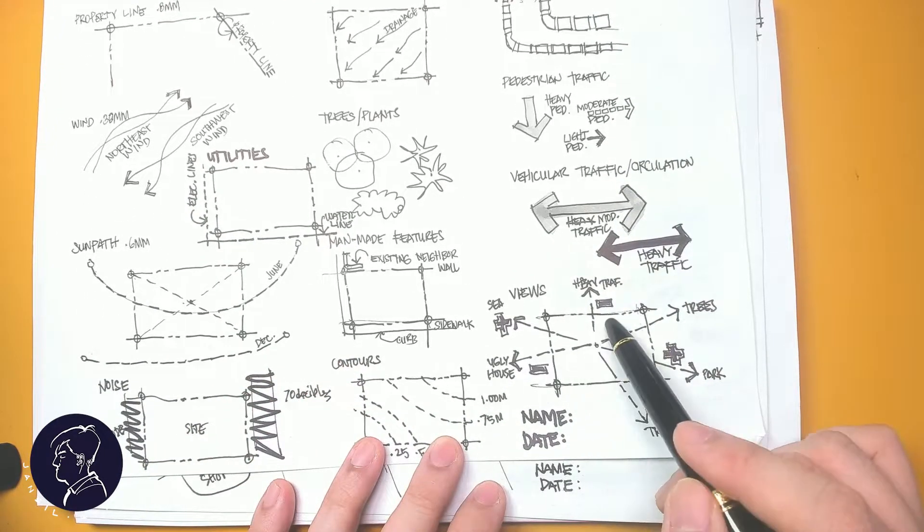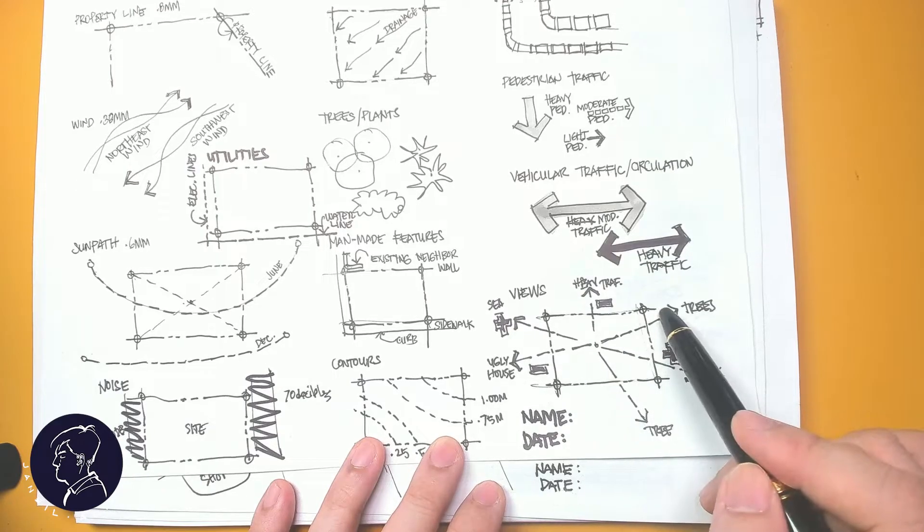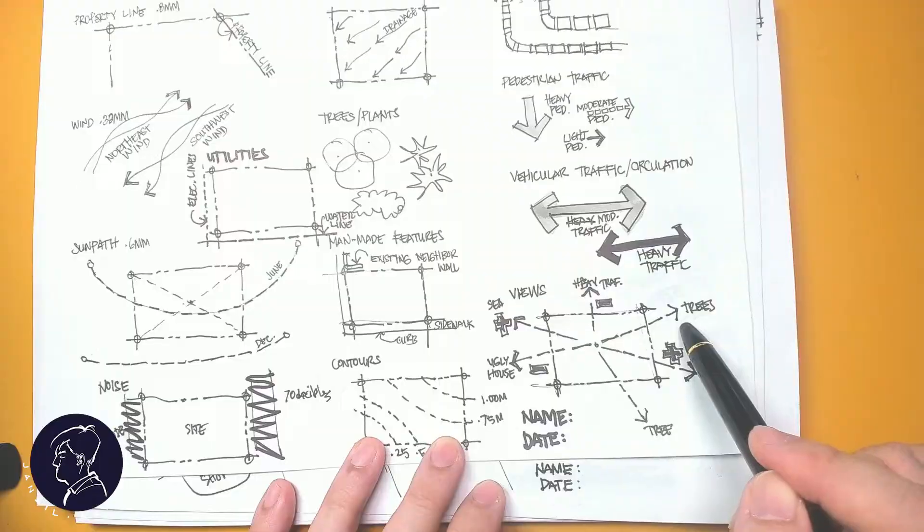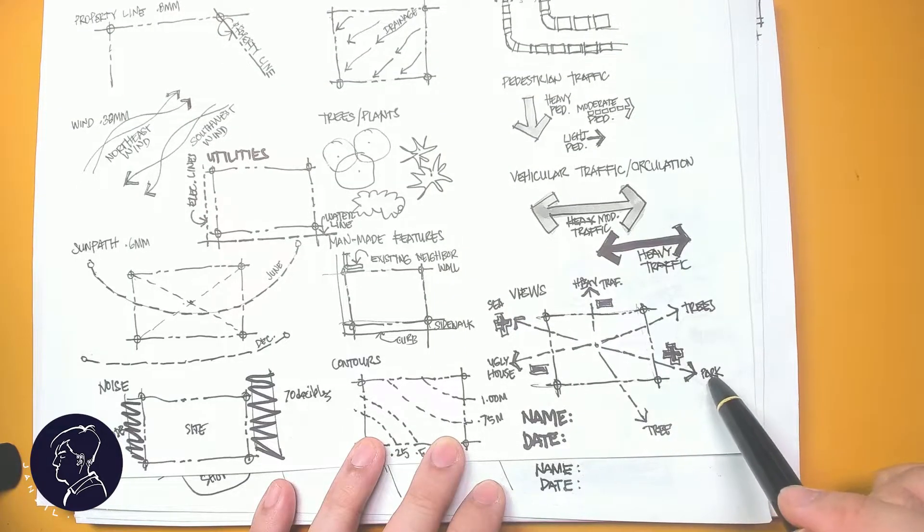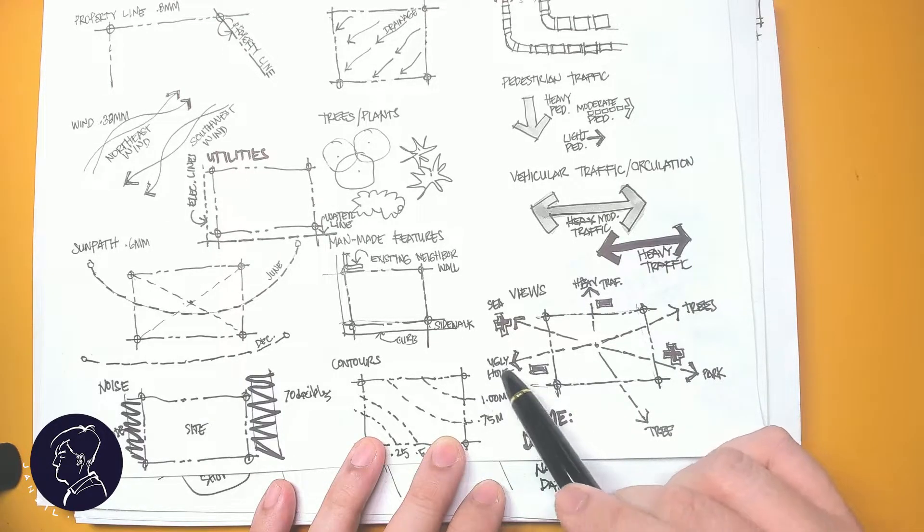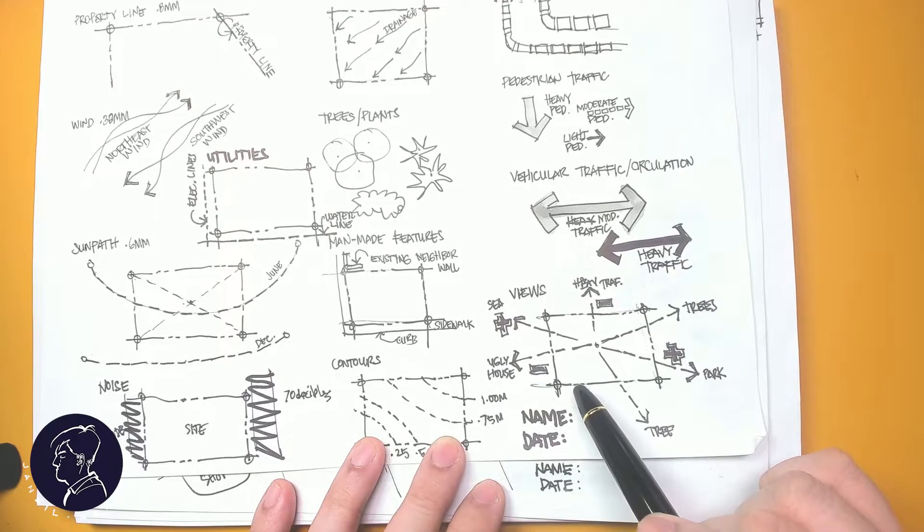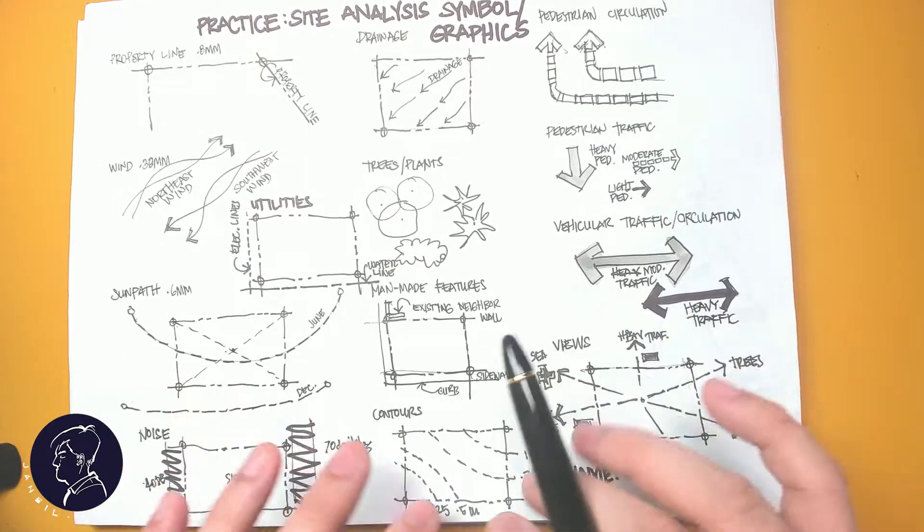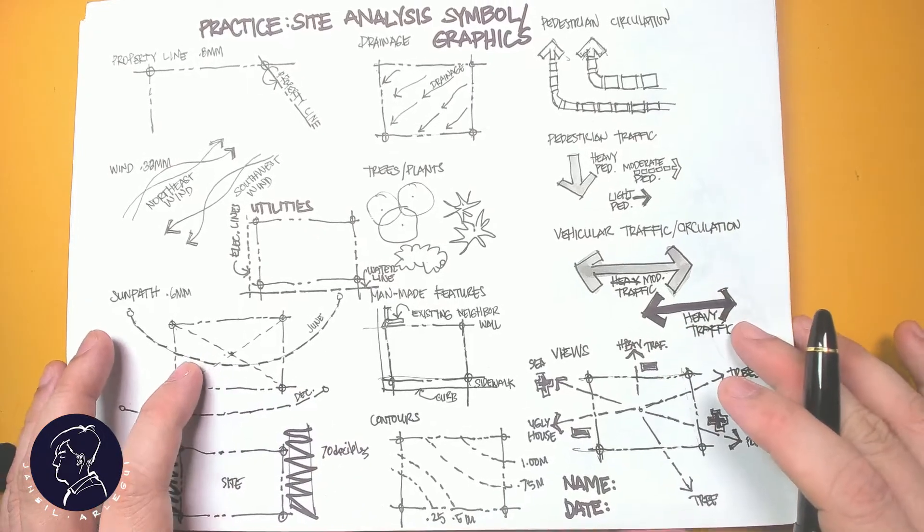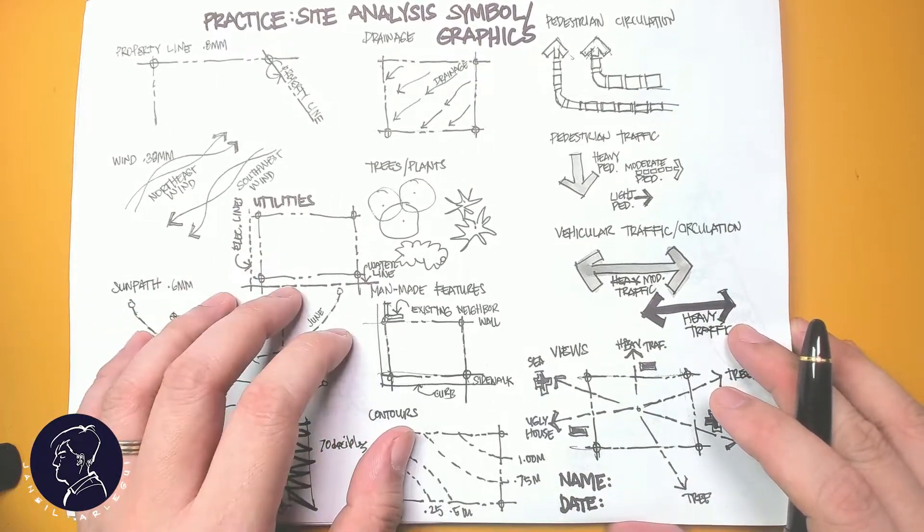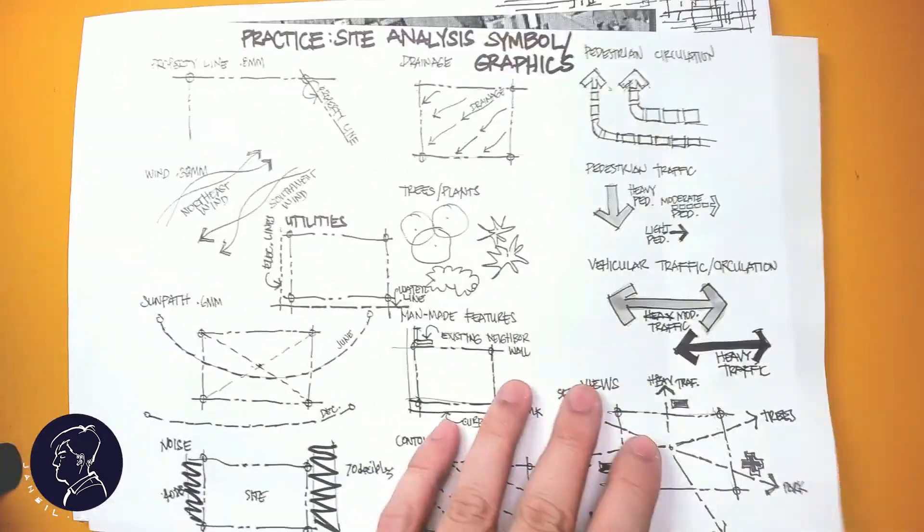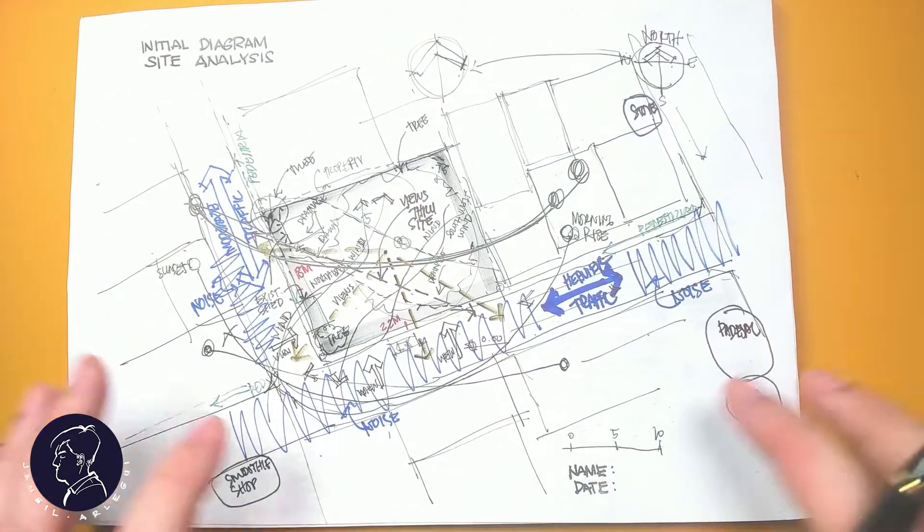Now, you can also take note of the negative and the positive views from your site. If there are parks and trees in that view, in that side of the lot, it could be more positive. If there's an ugly house, trash collecting area, that would be a negative. So you could do this first to get yourselves familiar with what the symbols are and what the information that you're trying to gather and how to symbolize it graphically.